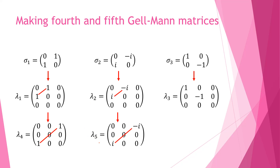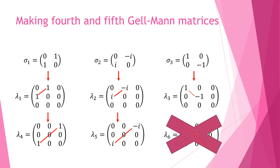Now the logical procedure would be: since I have done that for lambda 4 and lambda 5, then lambda 6 would follow the same procedure. But this is not what we're going to do. Lambda 6 is not obtained in this manner, and later I will explain why that is the case.